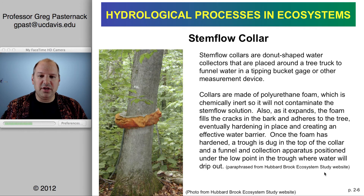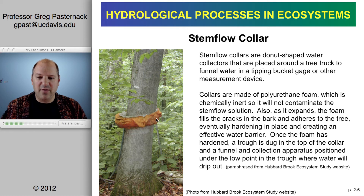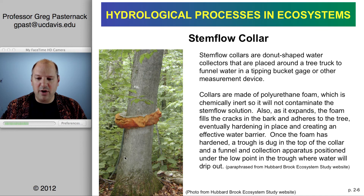The other key instrument needed is a stemflow collar. This captures all the water running down the stem, which tends to not be a lot. Foam is applied around the tree, filling in all the crevices in the bark and providing a collar. Plastic sheeting or hardened plastic is laid into the foam, and pipes run the water — the collar is angled so gravity accumulates the water and directs it into a pipe leading to a storage tank or tipping bucket gauge.